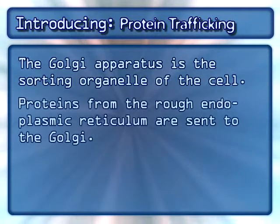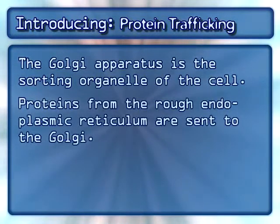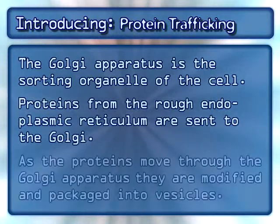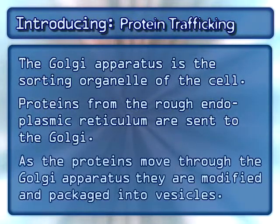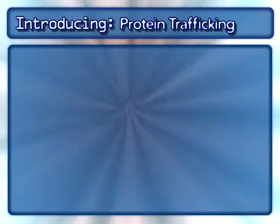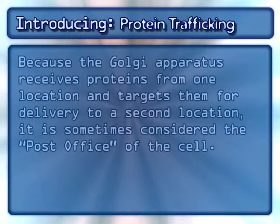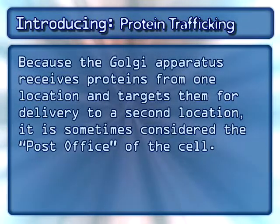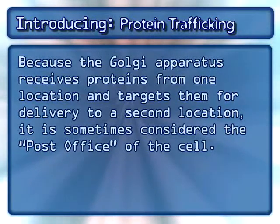Proteins from the rough endoplasmic reticulum are sent to the Golgi. As the proteins move through the Golgi apparatus, they are modified and packaged into vesicles. Because the Golgi apparatus receives proteins from one location and targets them for delivery to a second location, it is sometimes considered the post office of the cell.